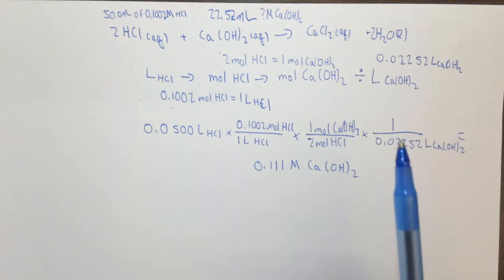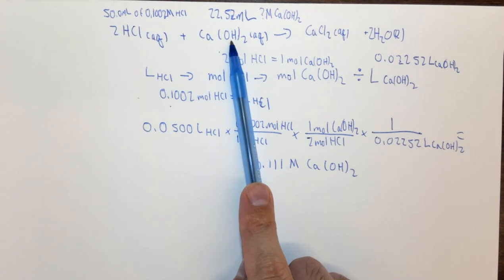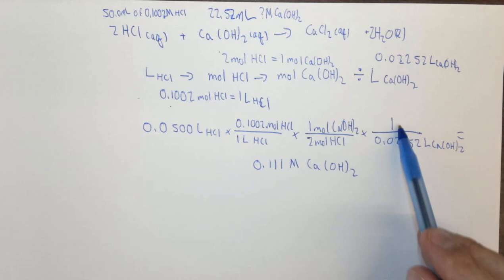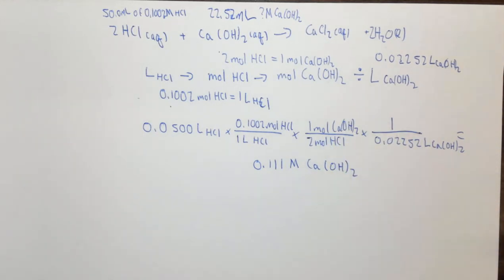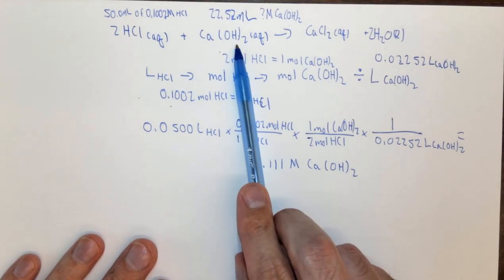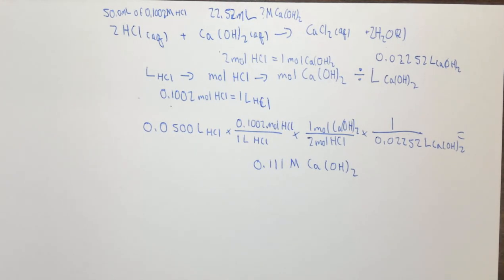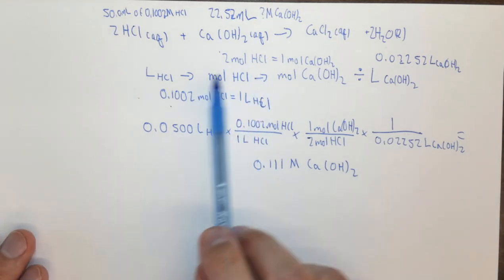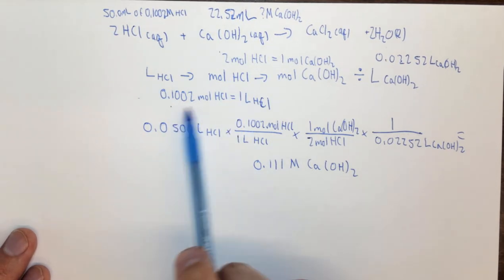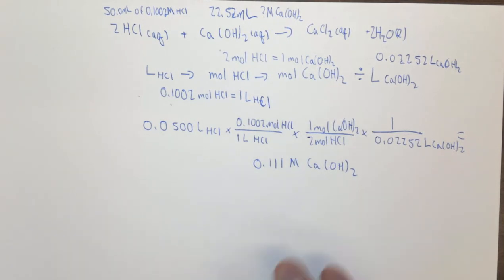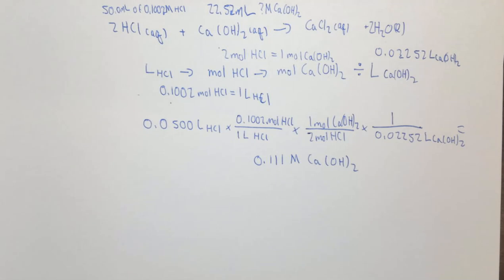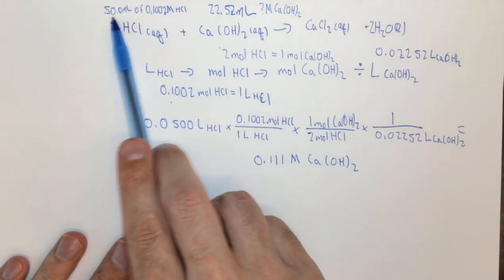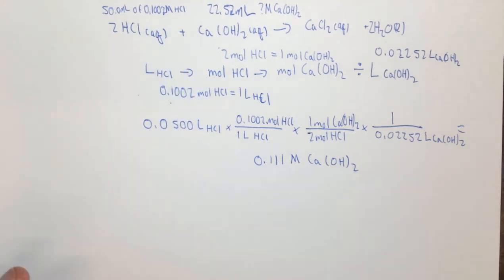A couple of interesting things to note: by knowing the amount of one reactant we can find the amount of another. Here we found the molarity, but we could have found the grams of Ca(OH)₂ if the question had asked. In this acid-base titration we use phenolphthalein as an indicator, which turns pink when the solution is neutral—when the amounts of HCl and Ca(OH)₂ are stoichiometrically equal. We used molarities and volumes to find moles, rather than grams and the periodic table.